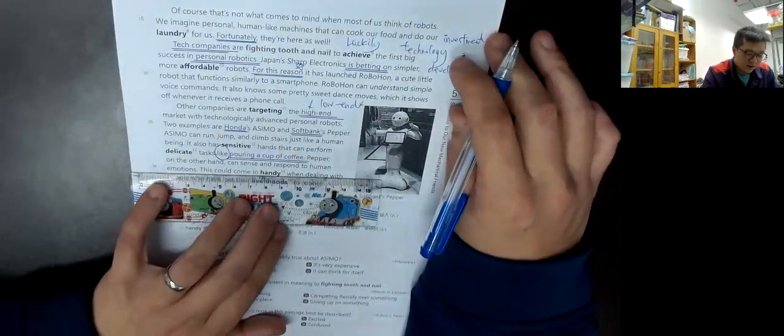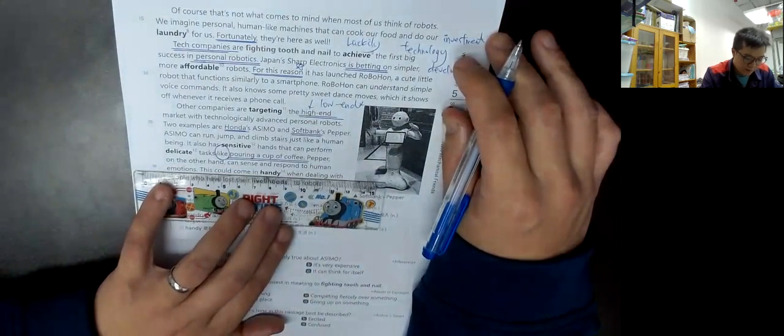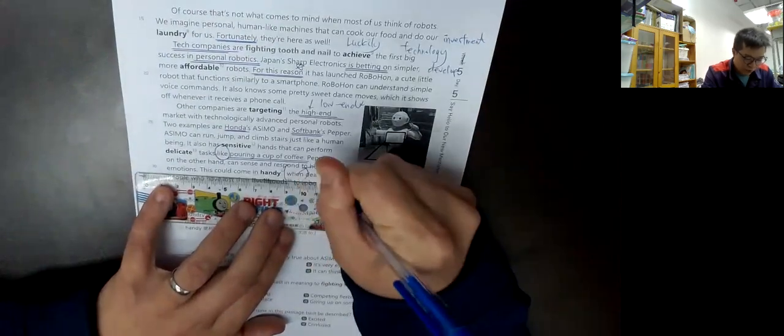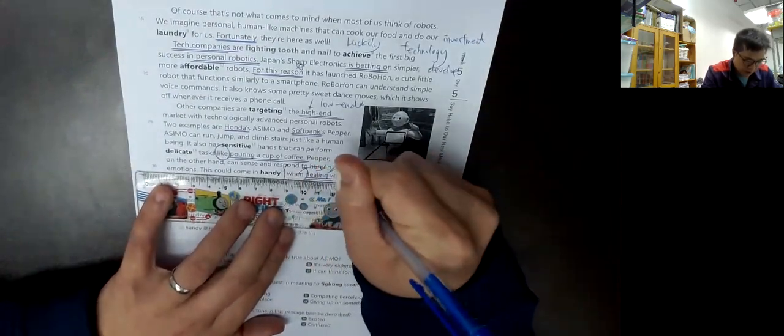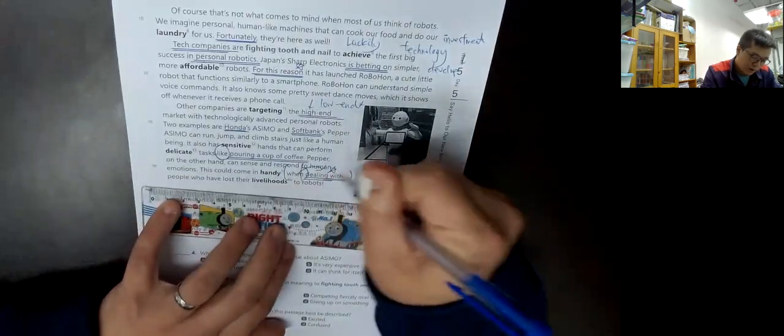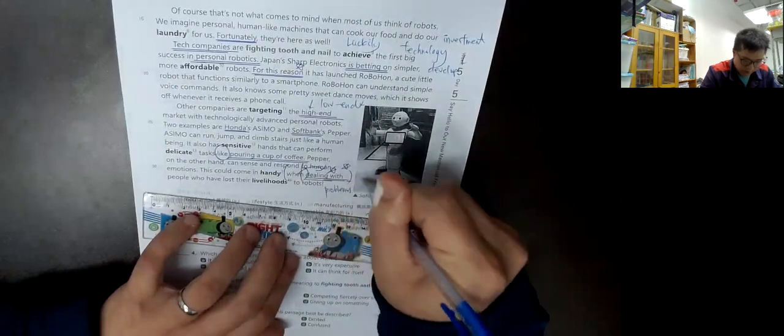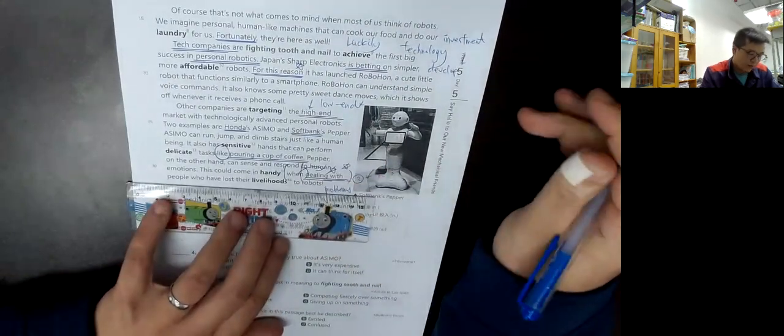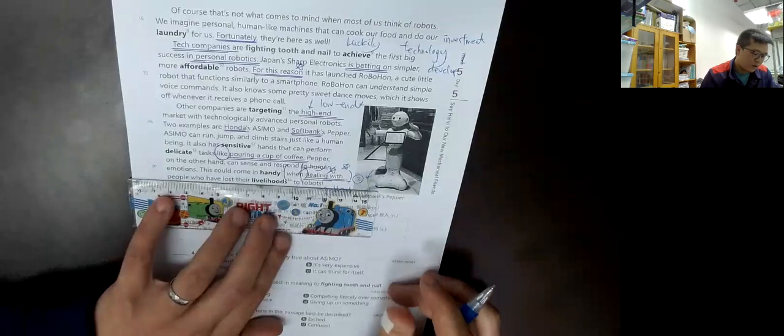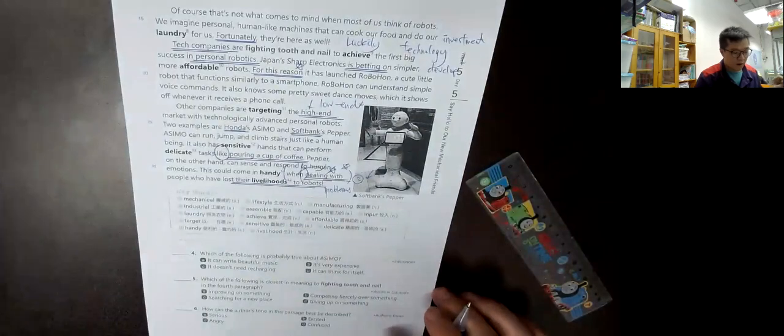Pepper, on the other hand, can sense and respond to human emotions. This could come in handy when dealing with people who have lost their livelihoods to robots.